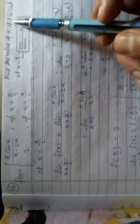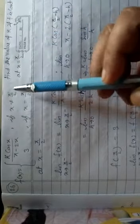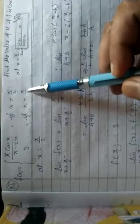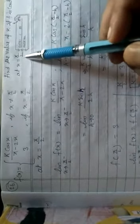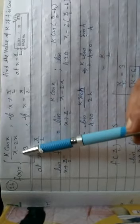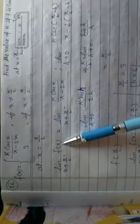Find the value of k if f is continuous. This means left hand limit, right hand limit, and the value at the point are all equal. We will compare two of them to get the result. At x = π/2, we write: limit x tends to π/2 negative, f(x) = k·cos(x) / (π - 2x). We substitute x = π/2 - h.